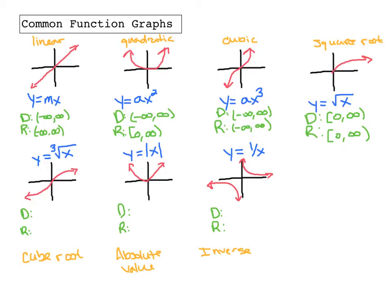For the cube root, we got domain, how far to left and right. Looking at these arrows, pretty tell-tale. It goes all the way to the left, all the way to the right, and the range, how far up and down. Okay, so you see these domain ranges repeat a lot.